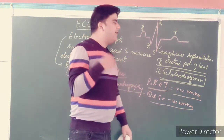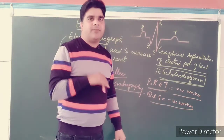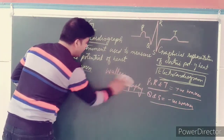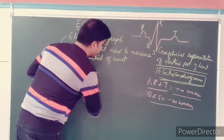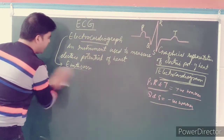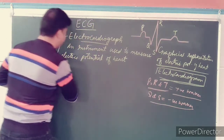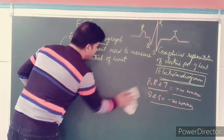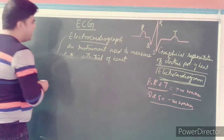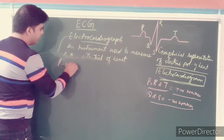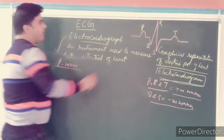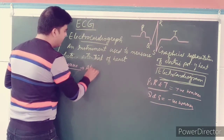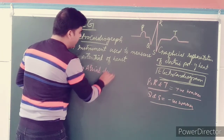Now let's understand what P wave, Q wave, R wave, S wave, and T wave each represent — what they interpret. First, the P wave: this wave above the baseline represents atrial depolarization.